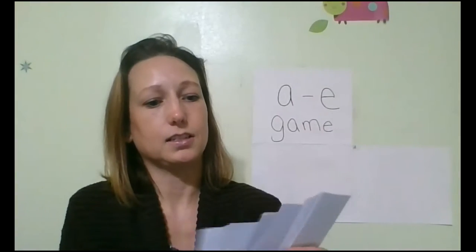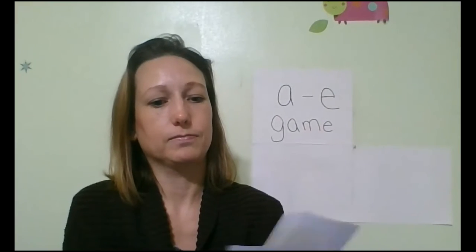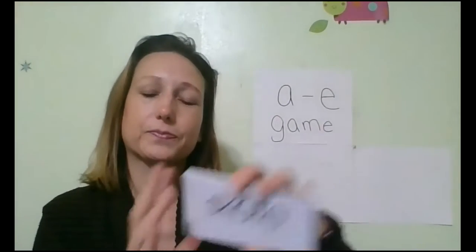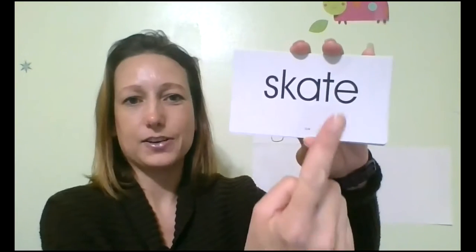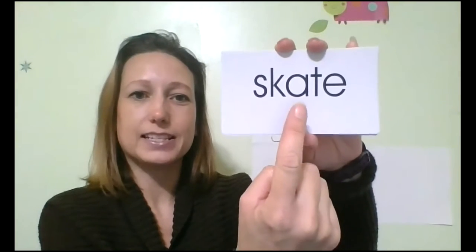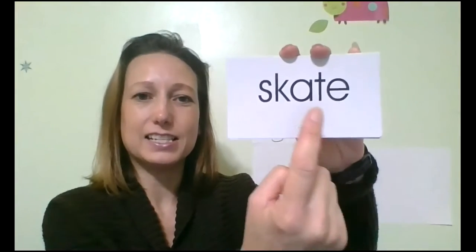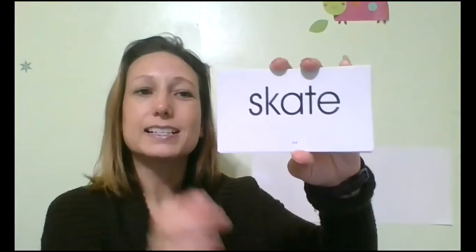Let's see. Let's try this one. Skate. Skate. And I know this is A because I see A consonant E says A. My E is going to be silent.